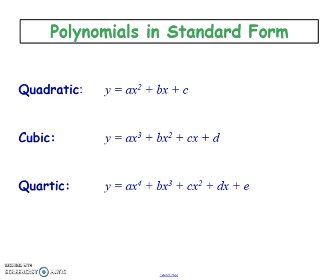Now if all of them are in standard form, the polynomials just look shorter or longer and we can't really tell what the x-intercepts or zeros are. But in standard form, the constant number at the back is going to be your y-intercept.